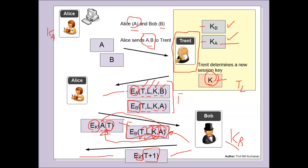So that's the setup of it. Bob and Alice's identities are sent to Trent. Trent picks off the encryption keys for both Bob and Alice, creates a new session key which is random, generates a timestamp and a lifetime. He will then encrypt the timestamp, the lifetime, the new key and Bob's identity with Alice's encryption key and sends that back. At the same time, he'll send through the timestamp, lifetime, the key and Alice's identity encrypted with Bob's key.